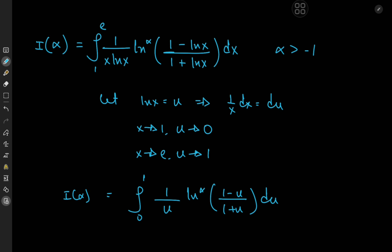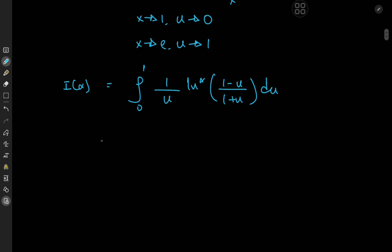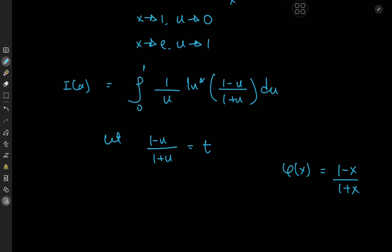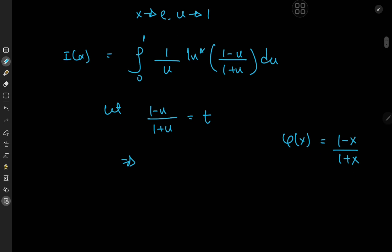It looks like we've done something right, and now we can invoke another very cool substitution: letting (1 minus u) divided by (1 plus u) equal t. This is a very useful substitution because the function φ(x) defined as (1 minus x) divided by (1 plus x) is a self-inverse function. So you have exactly the same structure determining the relation of u in terms of t. Expanding using 1 plus u, we have 1 minus u equal to t times (1 plus u), so that's t plus t times u. Solving for u in terms of t, we have tu plus u equal to 1 minus t.